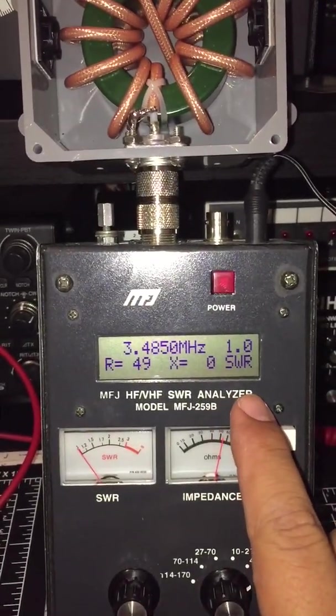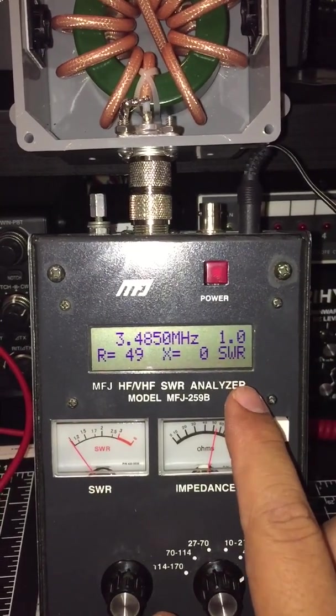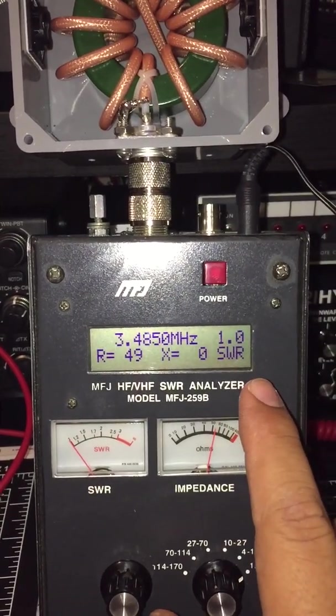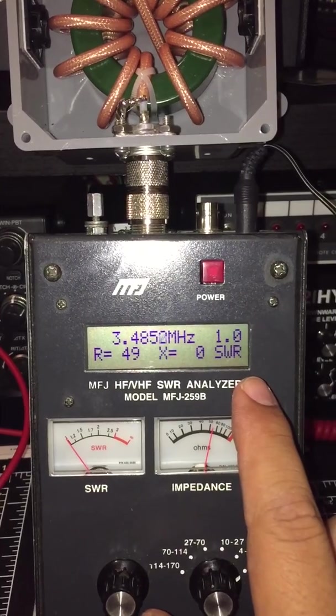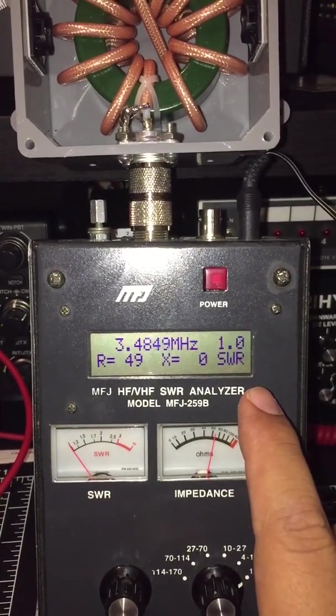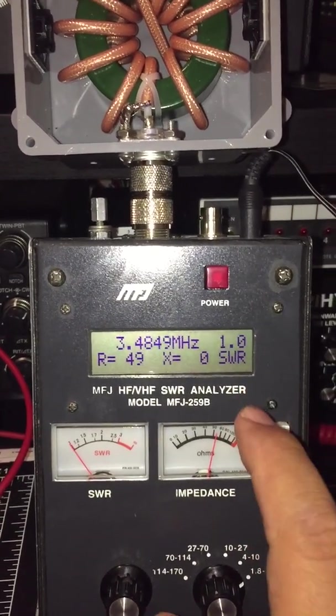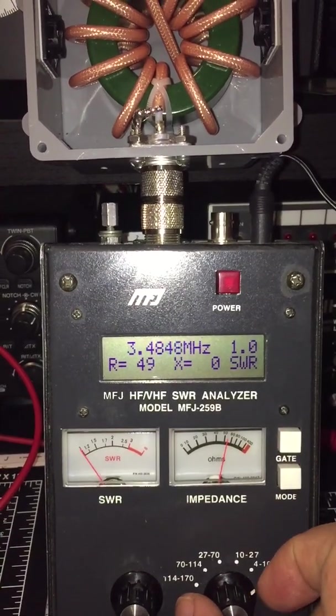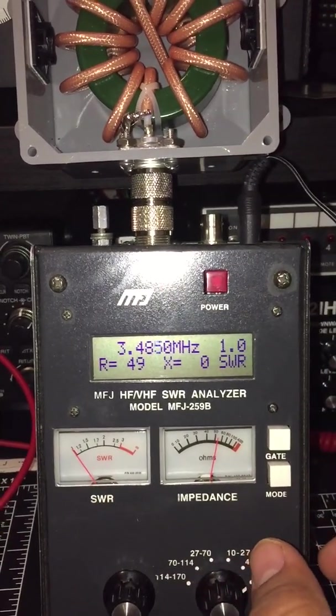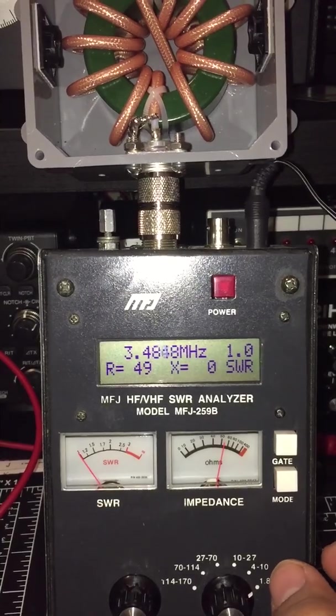You can see the SWR is basically flat throughout the whole HF spectrum, even in VHF. That's when we start seeing an increase, but very, very minimum. If you want to use it for 2 meters, you'll be able to use it.